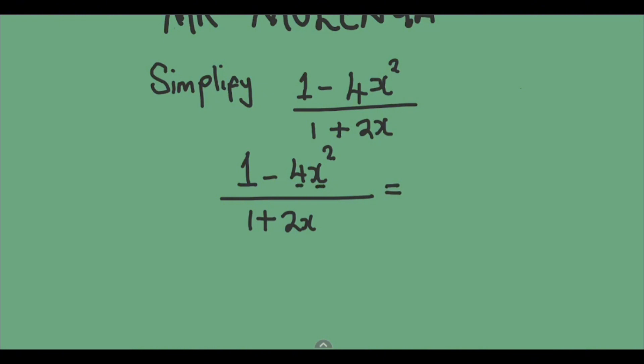Now this 4 is a perfect square, so we have to write it in index form. So we're going to have 1 squared minus 2 squared, then x squared over 1 plus 2x.